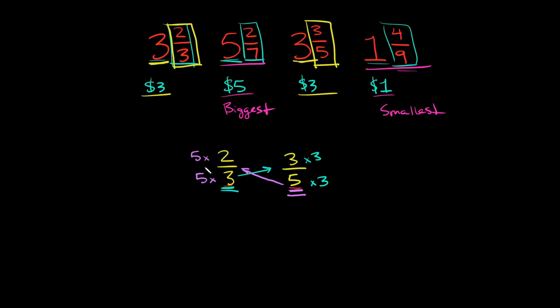Now all we have to do is simplify this. So what's 5 times 2? That's 10. What's 5 times 3? That's 15. Now on this side, what's 3 times 3? 9. And then what's 5 times 3? 15. As you can see, they have the same denominator now. 15.